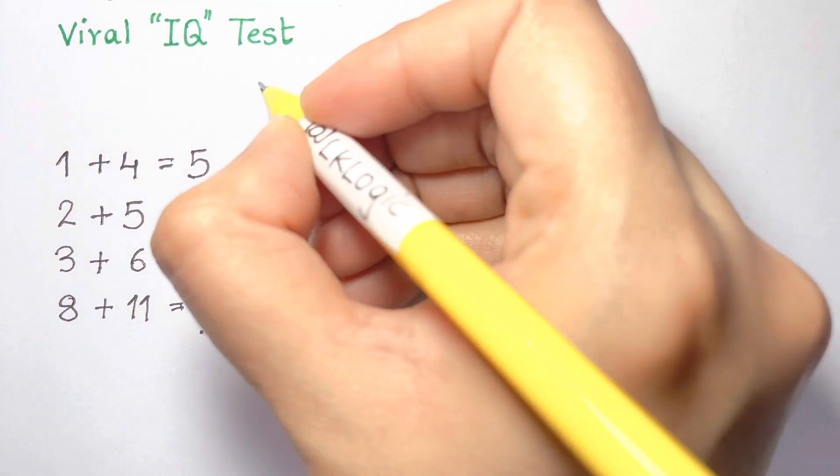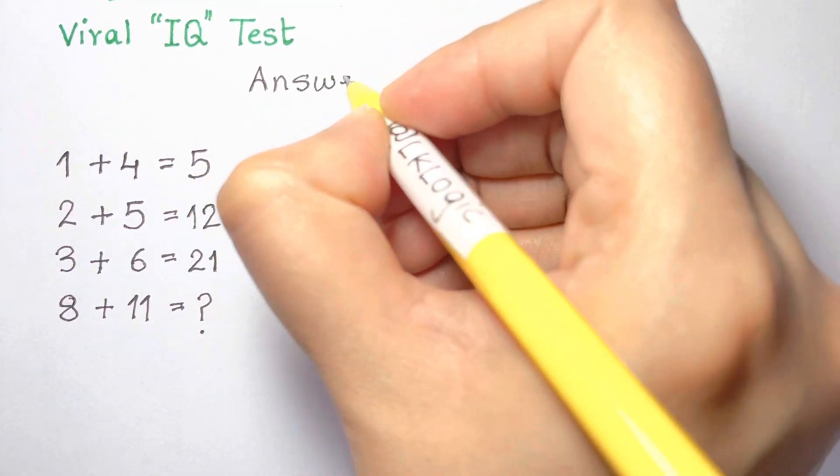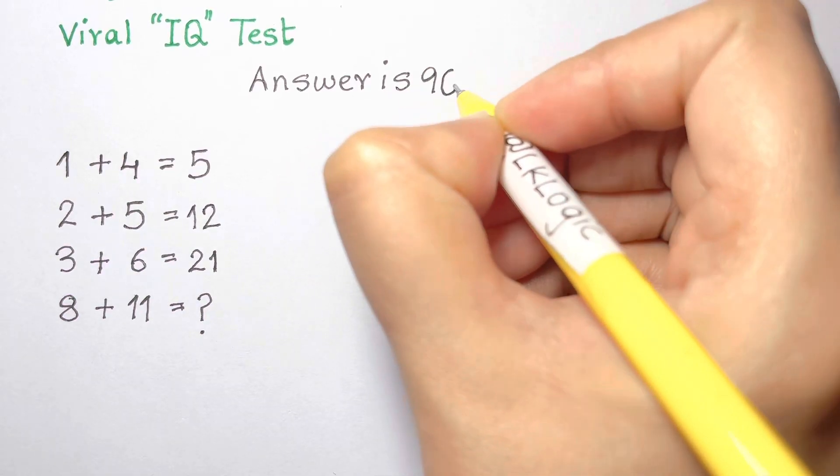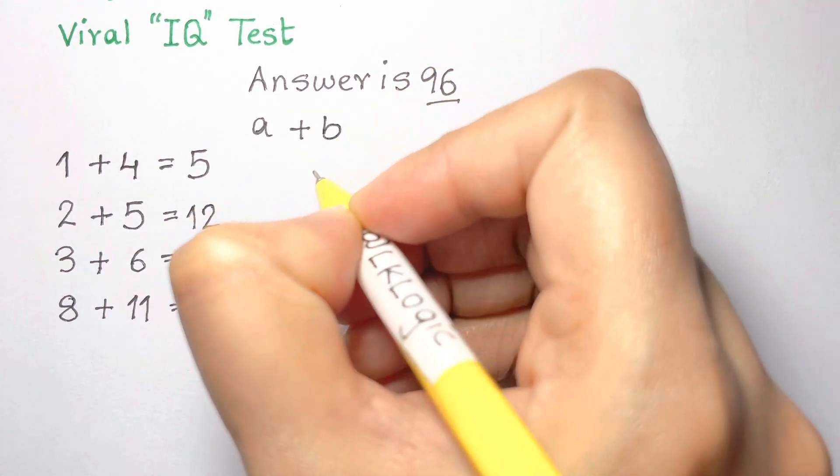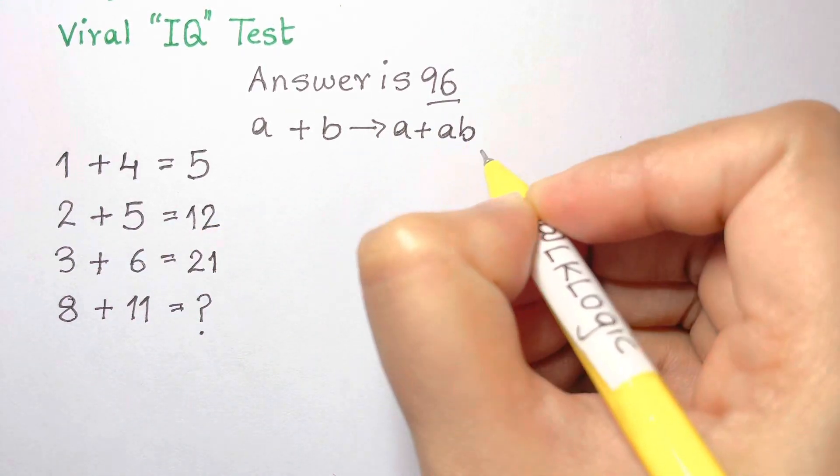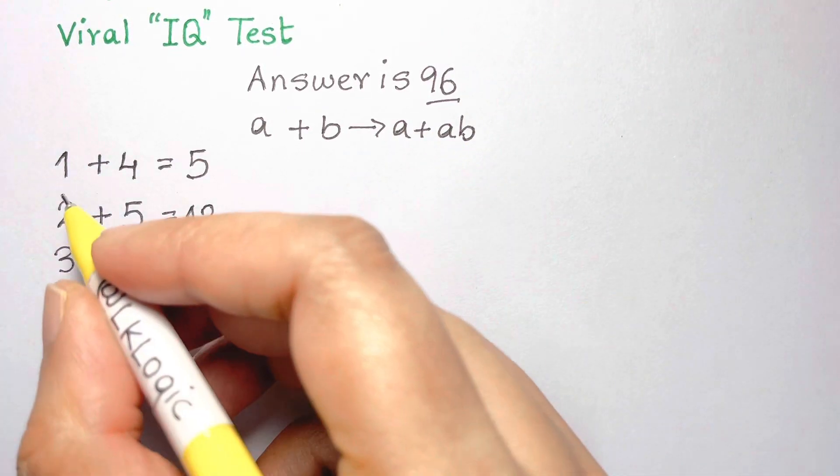So most people agree that the answer should be 96. The pattern in each line is take the first number and add it to the product of the first and second number. So for example: